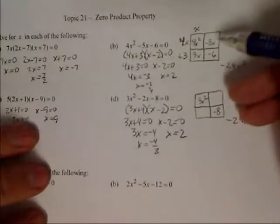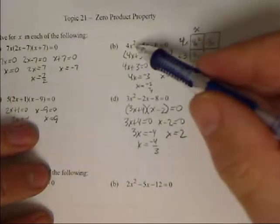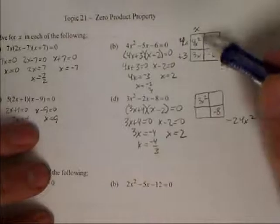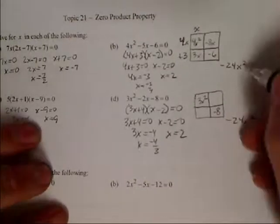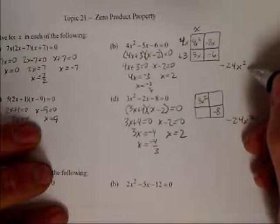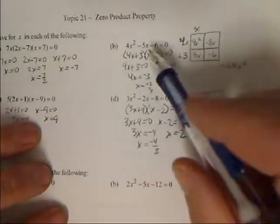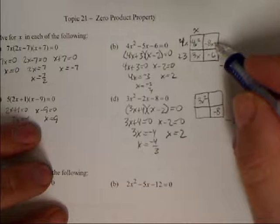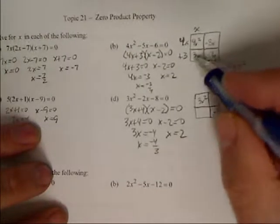Now for the other part, you're going to have to factor first. So what you should do is, this is where the rectangles really help out. 4x squared I put up here, negative 6 put down here. 4x squared times negative 6 is negative 24x squared. I need two numbers, one will be positive, one will be negative, that multiply to give me negative 24, but add to give me negative 5. So if I use negative 8x and 3x, this will give me the terms that will go inside my rectangle.